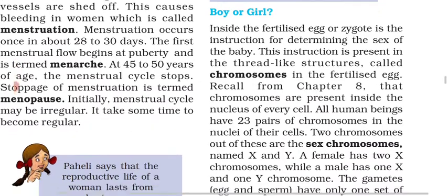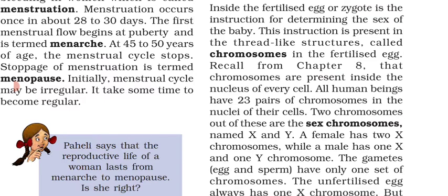This instruction is present in the thread-like structure called chromosome in the fertilized egg. As you may recall, chromosomes are present inside the nucleus of every cell. There are many types of chromosomes: some define our body structure, some relate to health and hair, and some chromosomes determine our sex — those are known as sex chromosomes.